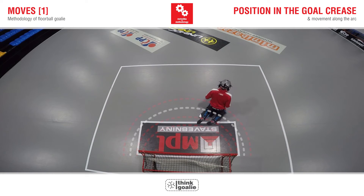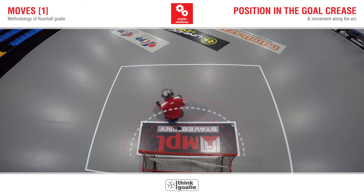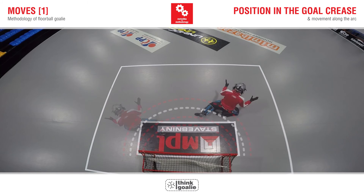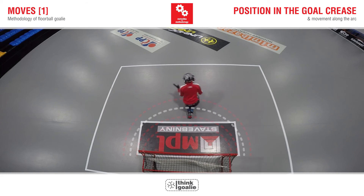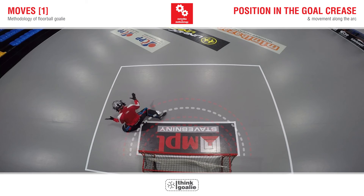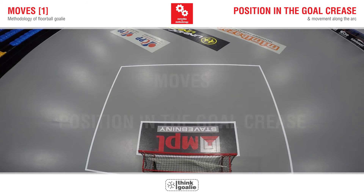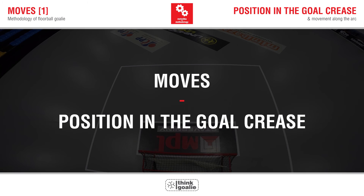As can be seen, although the goalkeeper can handle his moves technically well, if he does not get into the correct position, his performance will go down. He has to move not only the best way he can, but also to the right place, which we have just derived. What is an efficient technique of moves and what kind of move a goalkeeper should use in different situations — and especially why — will be shown in the next episode.